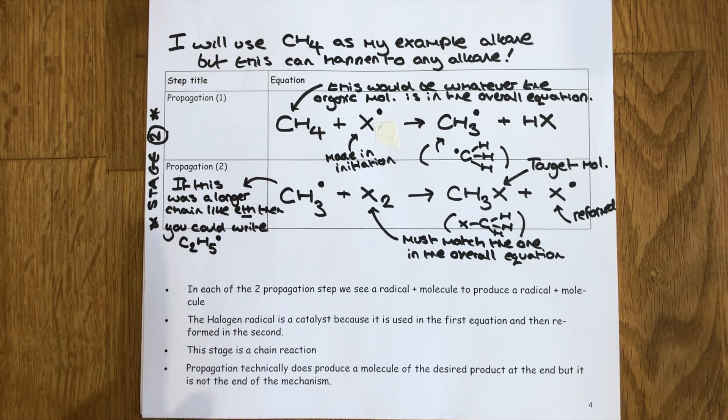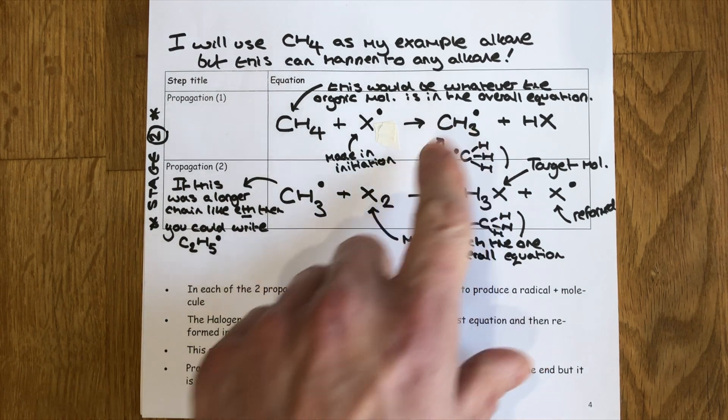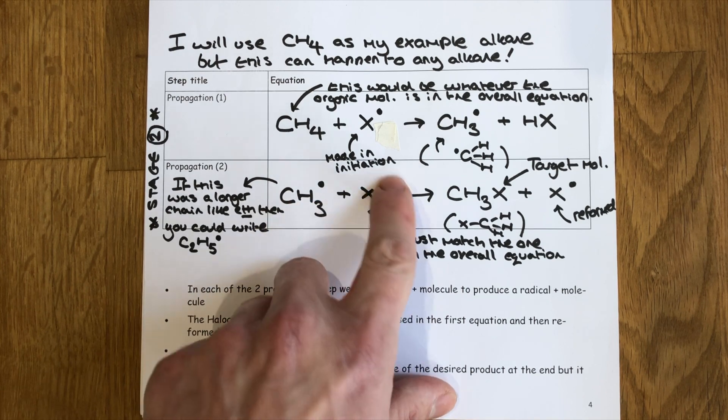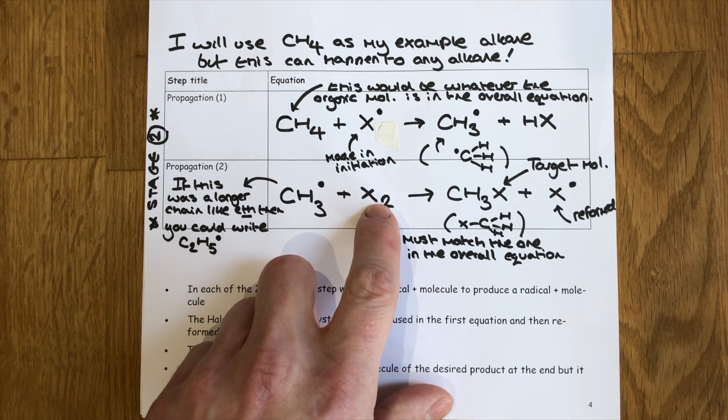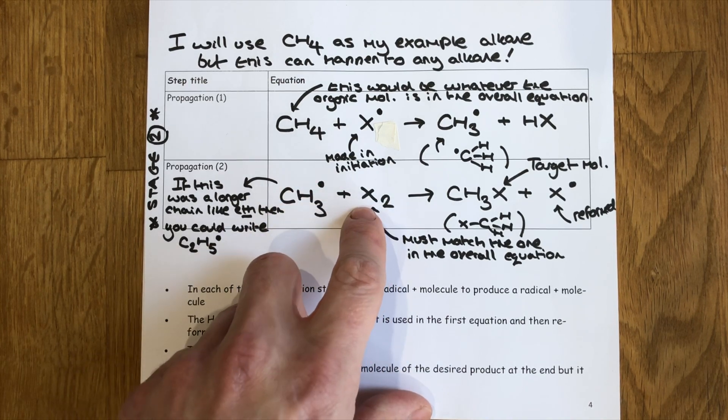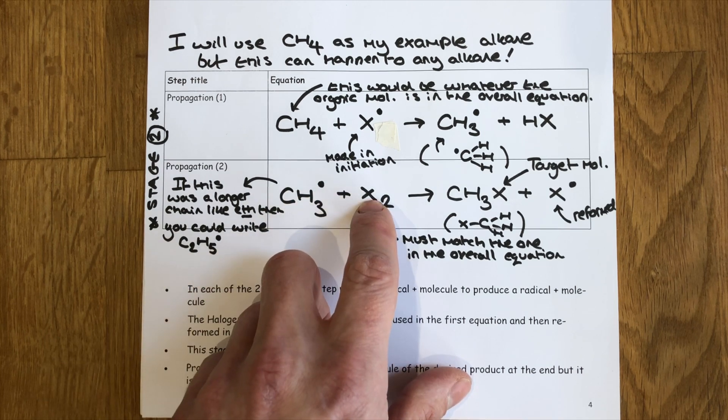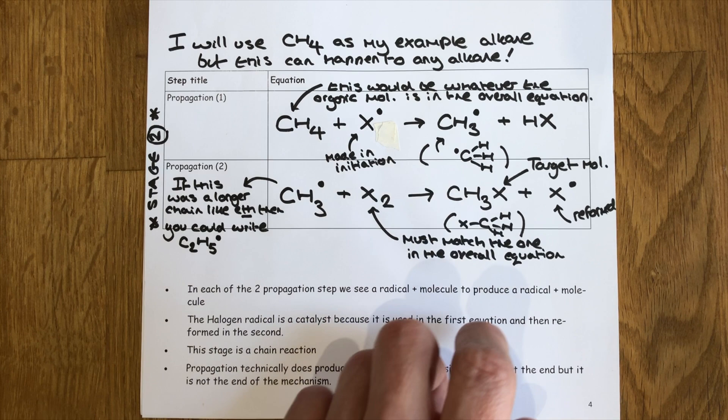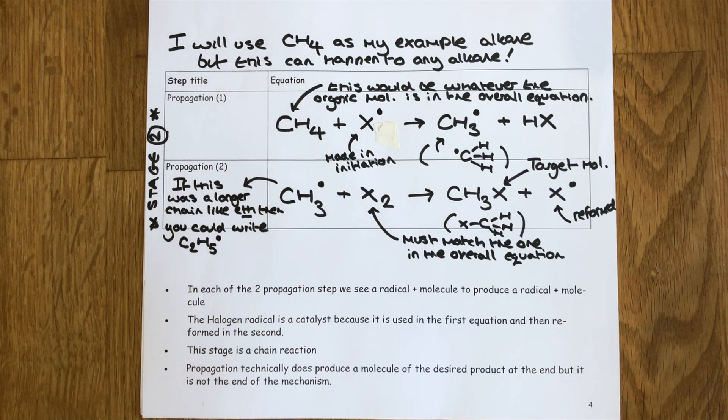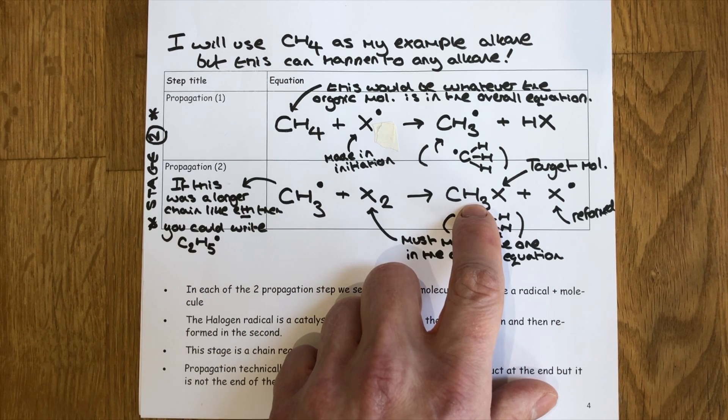For stage two, and by the way this was voted by last year's students as the most difficult stage of radical substitution to remember correctly, we take the alkyl radical that we've just made and we react it with the original halogen that was shown to have reacted in initiation. So my CH3 radical here is reacting with the X2 and it must be the one from the overall equation. The radical pinches one of the X's causing an intact molecule which is our target organic molecule, our haloalkane, and we reform the halogen radical that we saw getting used in the first stage of propagation.